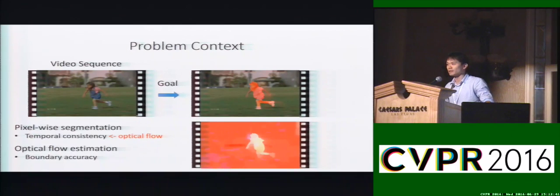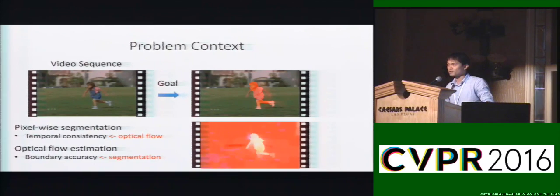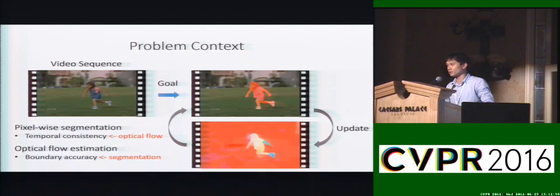To maintain temporal consistency, we can use the object flow to obtain this information. And for object flow estimation, we can use segmentation to obtain details around the boundary. Based on these two observations, our goal is to update and improve the results for both the segmentation and optical flow.